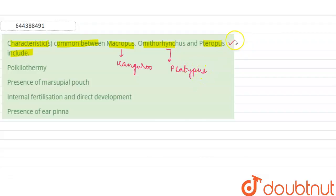And third, we have Pteropus. We have to find out the characteristics which are common between kangaroo, platypus, and Pteropus.